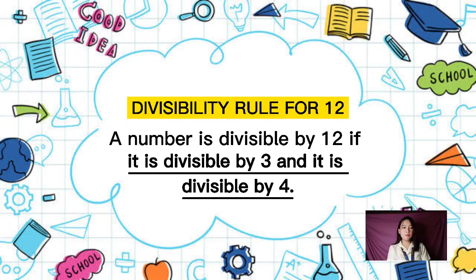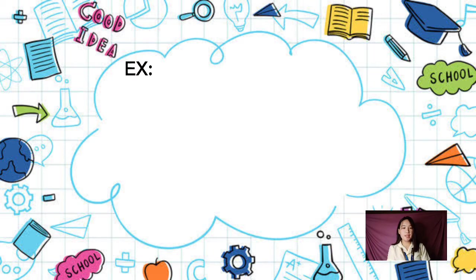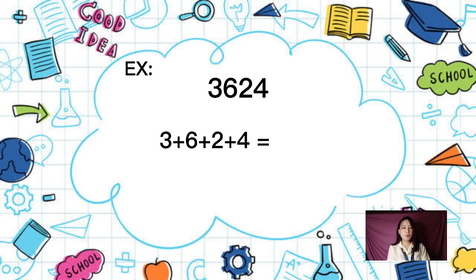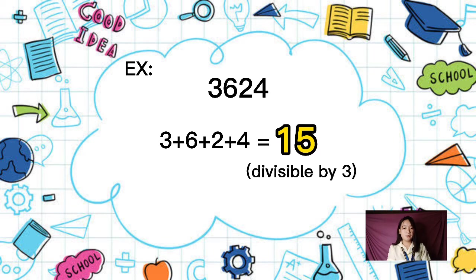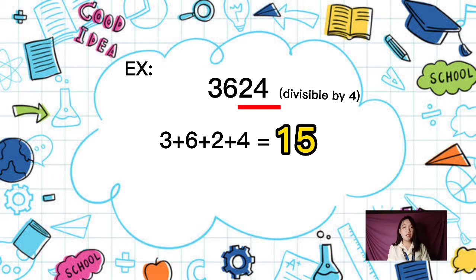A number is divisible by 12 if it is divisible by both 3 and 4. For example, 3,624: the sum of its digits — 3 plus 6 plus 2 plus 4 equals 15 — is divisible by 3. The last 2 digits are 24, which is divisible by 4 as well.